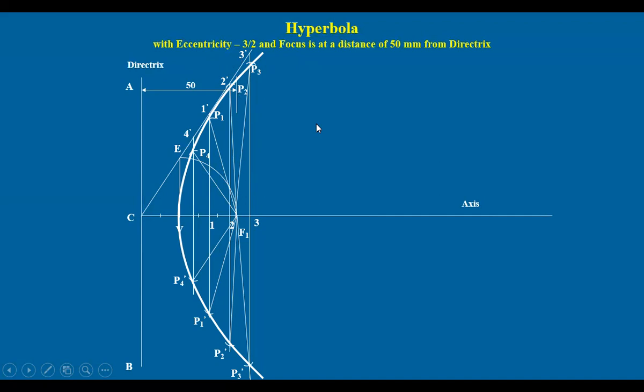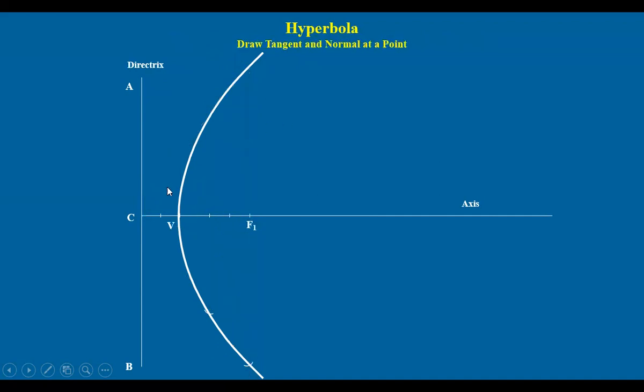Now suppose you have drawn the curve and we want to mark the tangent and normal at some point. Some point we have taken, say P.